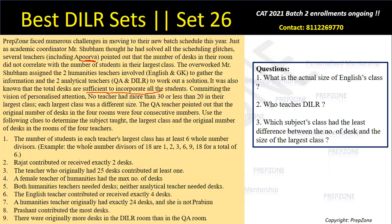Hint number one: the number of students in each teacher's largest class has at least six whole number divisors.